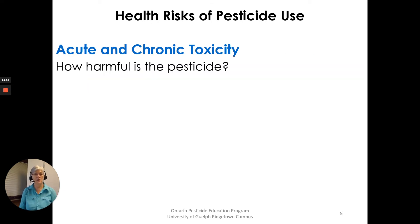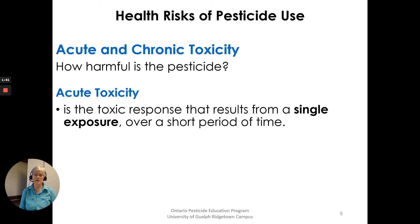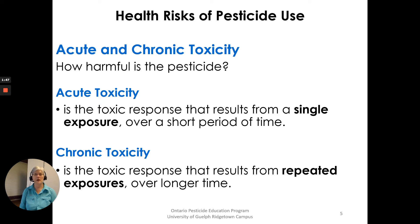Acute and chronic toxicity — two types of toxicity. How harmful is the pesticide? Acute toxicity is a toxic response that results from a single exposure over a short period of time. Chronic toxicity is the toxic response that results from repeated exposures over a longer period of time.